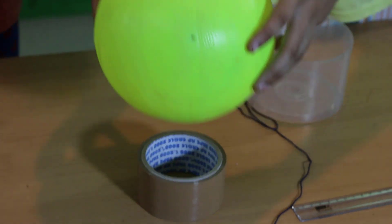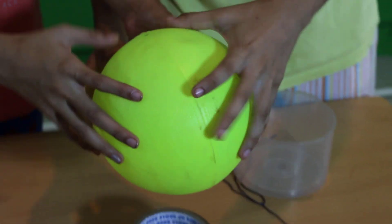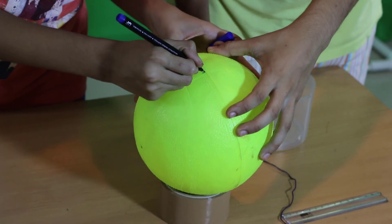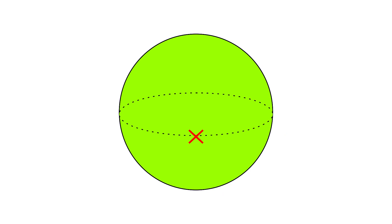First of all, let us start by making the first marking on the ball. Now, let us make several markings on the ball as shown in this image.